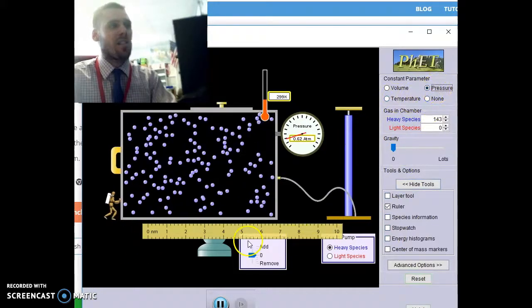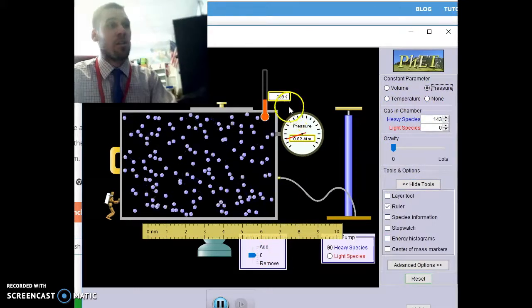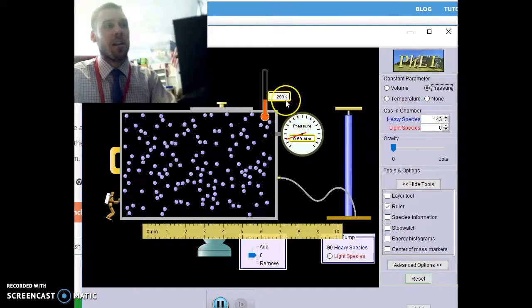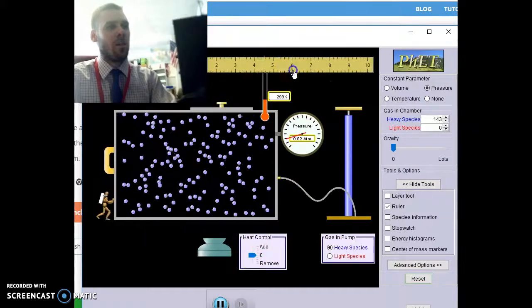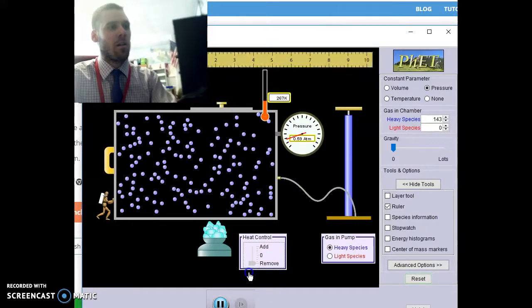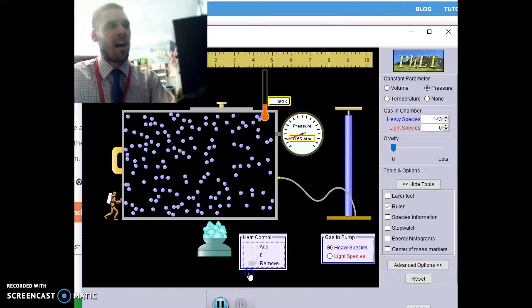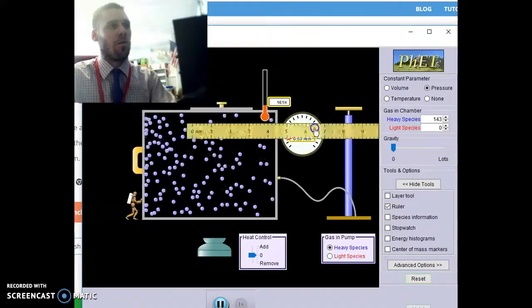So once pressure is held constant, I can go ahead and change the temperature to 10 different data points. The unit measurement is going to be in Kelvin. So you can drop the temperature and see how volume is going to respond.